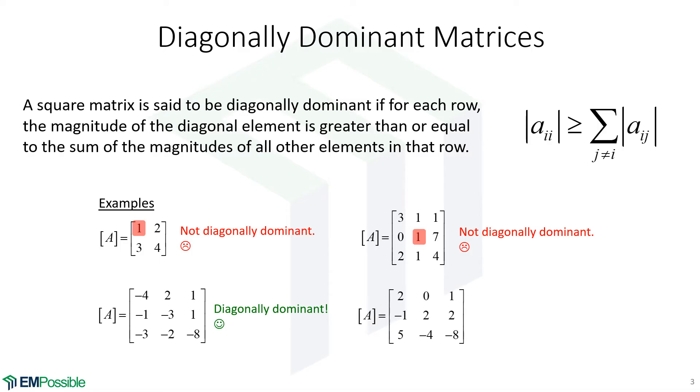One last example. Is this diagonally dominant? And it's no. And that's because two is not greater than one plus two, which is three. Likewise, in this row, eight is not greater than four plus five, which is nine. So that is not a diagonally dominant matrix, and Jacobi iteration probably could not be applied to that.